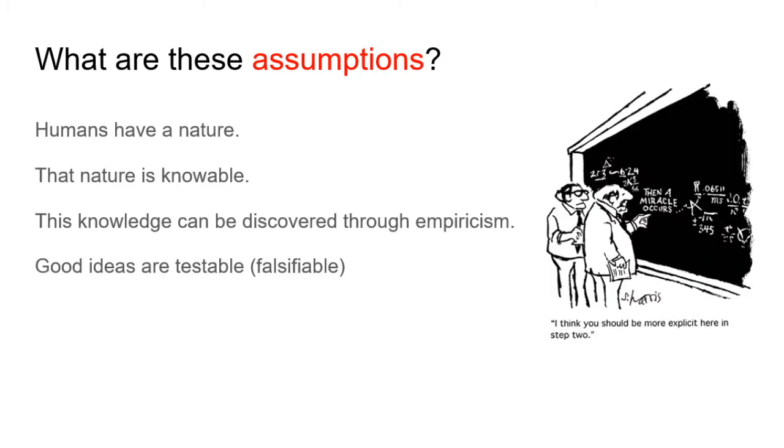What are these assumptions that scientists make? The assumption primarily is that humans have a nature, that that nature is knowable, and that this knowledge can be gained or discovered through empirical research. That is, research that is based upon things you can see, hear, smell, taste, and touch, sometimes known as palpable evidence. And finally, good ideas are testable. That is, that they are falsifiable.